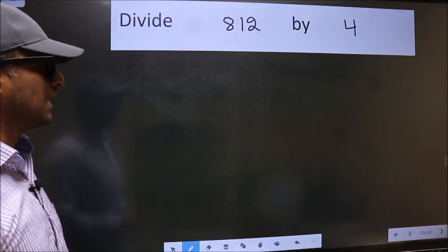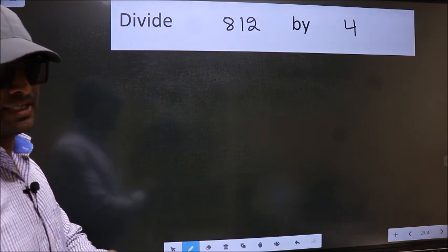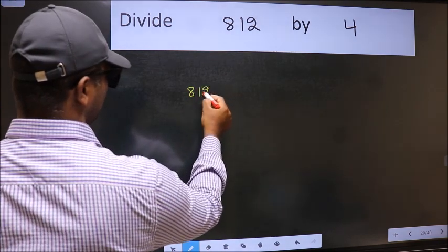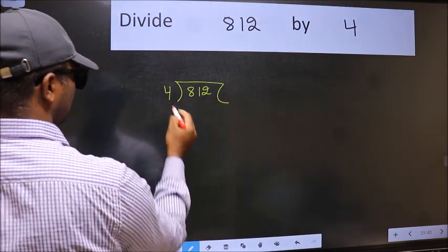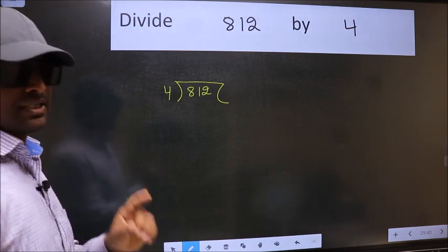Divide 812 by 4. To do this division, we should frame it in this way. 812 here and 4 here. This is your step 1.